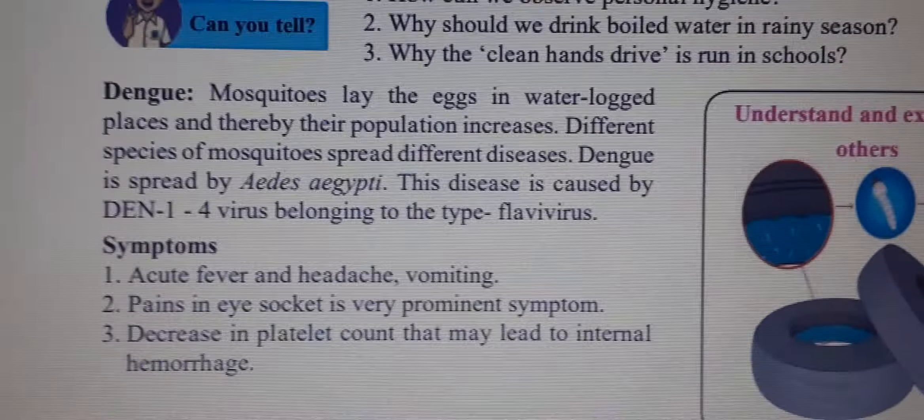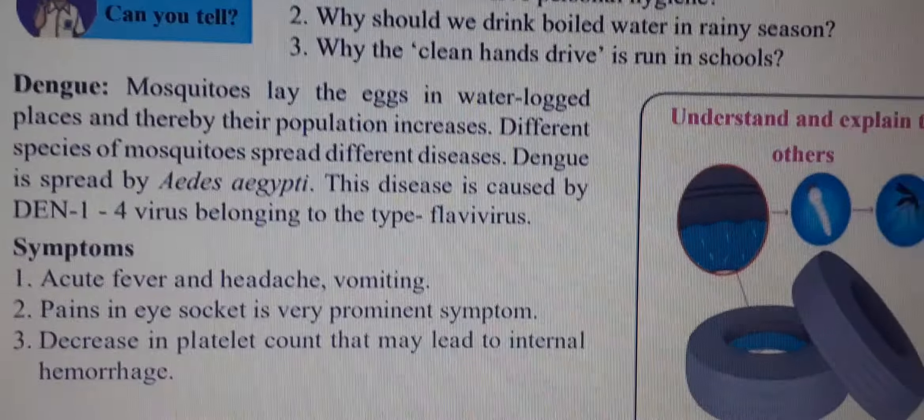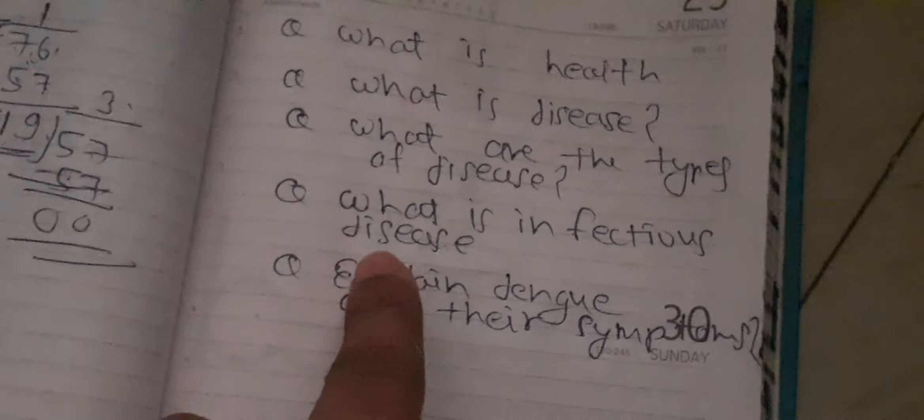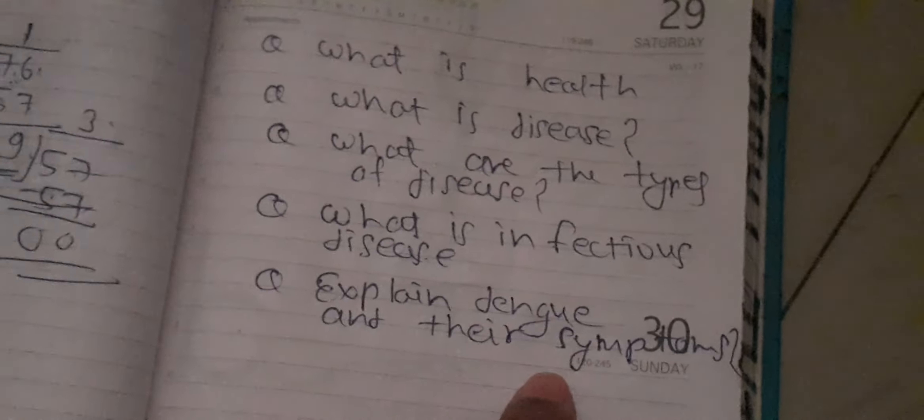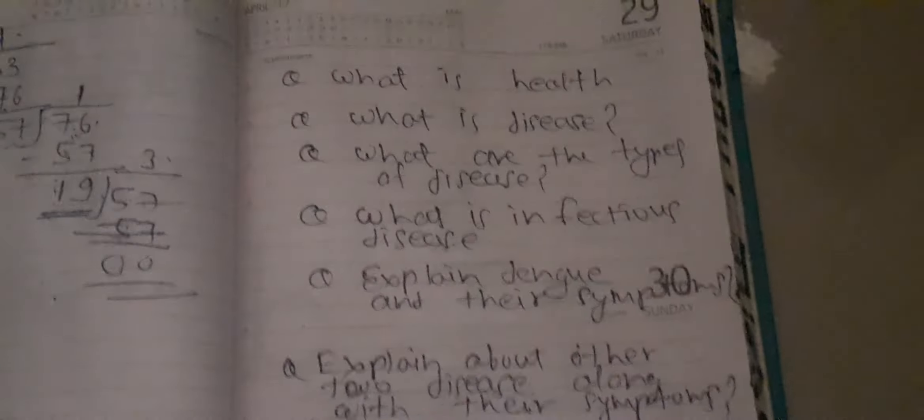Next question: explain about dengue and their symptoms. Then explain about any other two diseases along with their symptoms, using the table. So you have to complete the answers to these six questions. If any doubt is there, please ask. Thank you, have a great day.